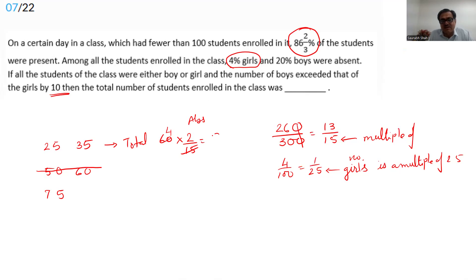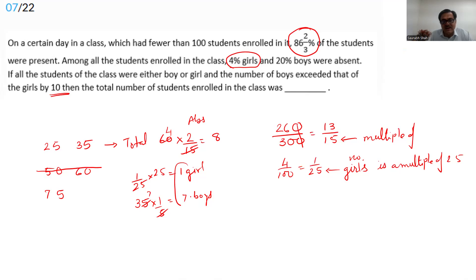Verifying: 1/25 of 25 girls = 1 girl absent. 20% of 35 boys = 7 boys absent. Total absent = 8, which matches. Everything is consistent — the enrollment in the class was 60 students.